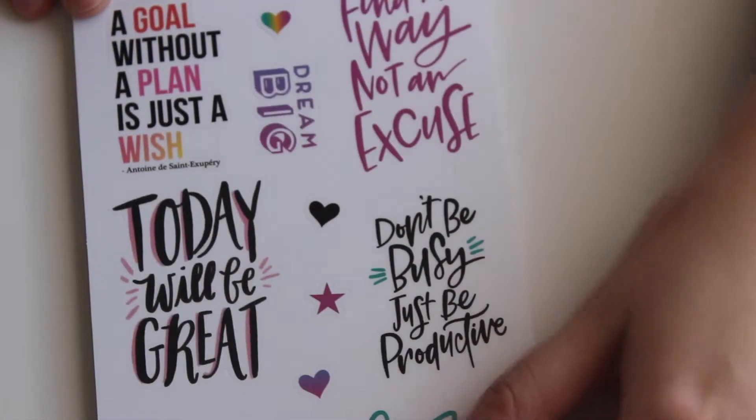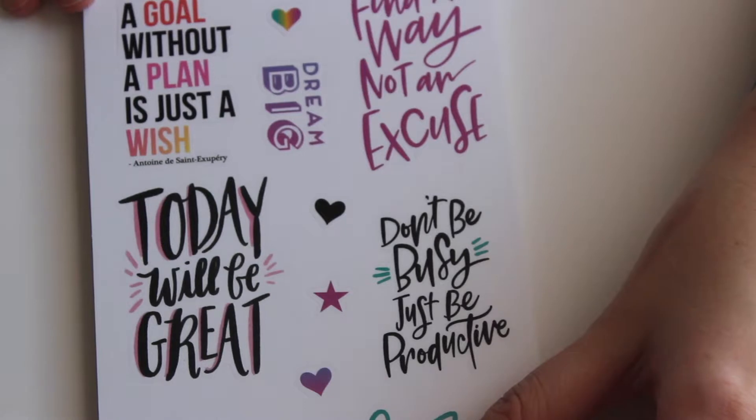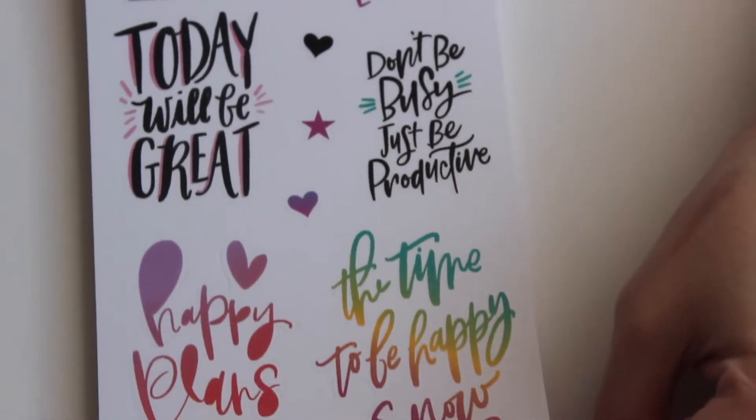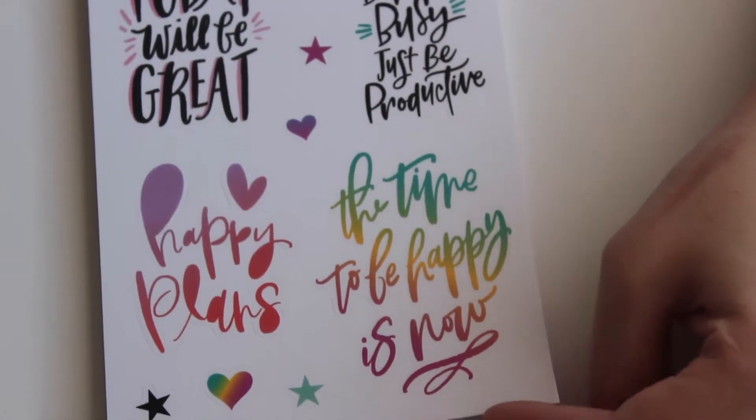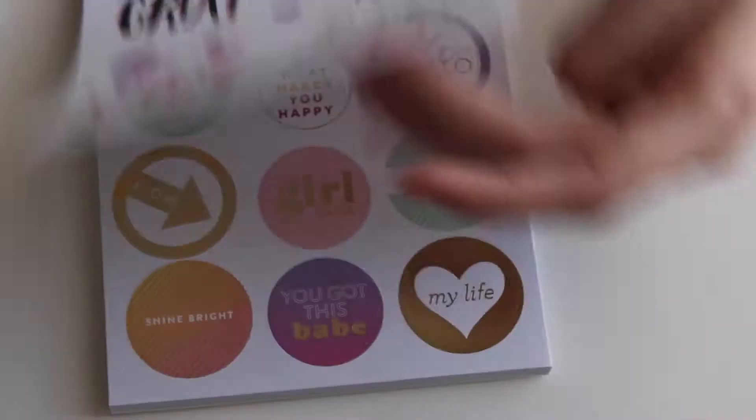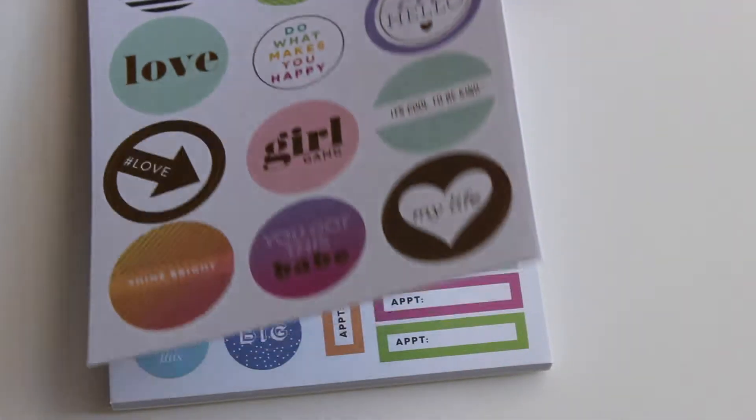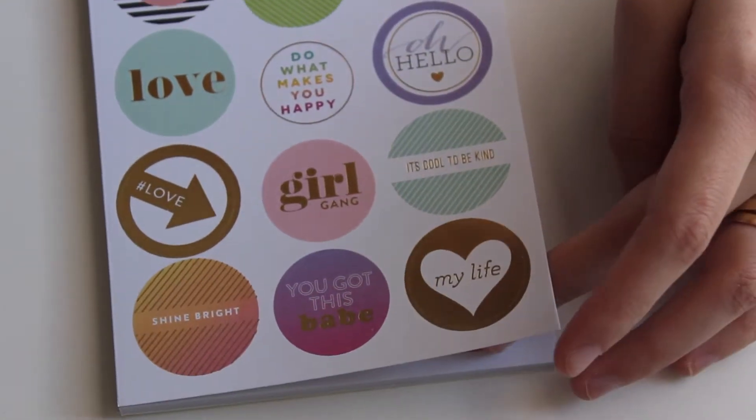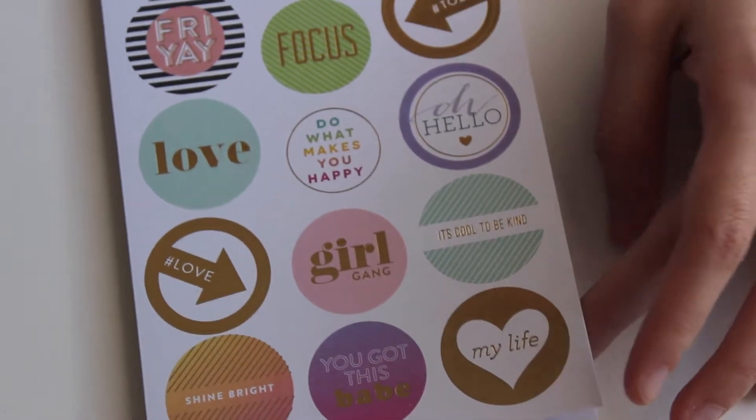And these are the clear stickers. The other ones before were paper. These are the clear print ones. And these are the paper print. And these are just circle quotes, little circles and designs.